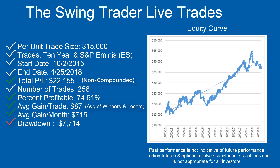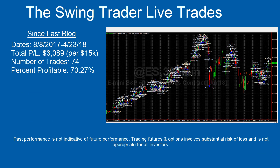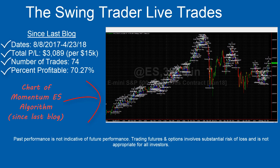That gives you an idea of how we've done since the algorithm went live almost three years ago. It's also been a few months since we did a video blog, so I wanted to give a brief highlight on how we've done since the last one. The last blog covered the period ending August 8th, 2017, and here we are in mid-April 2018. Since then, the algorithms are up about $3,089 per $15K traded — roughly 20%. There have been about 74 trades and about 70% have been profitable. This chart here is a chart of the S&P since that period, showing the trades we placed as the market went higher and then drifted sideways.